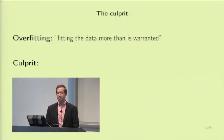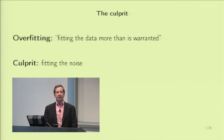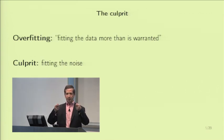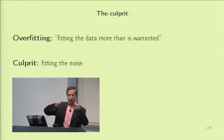Overfitting as a criterion is fitting the data more than is warranted. The culprit is that you are actually fitting the noise. The data has noise in it, and when you try to get the finite sample right, you are inadvertently fitting the noise. There is no pattern to detect in the noise, so fitting the noise cannot possibly help out-of-sample.